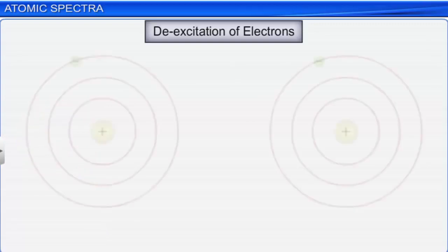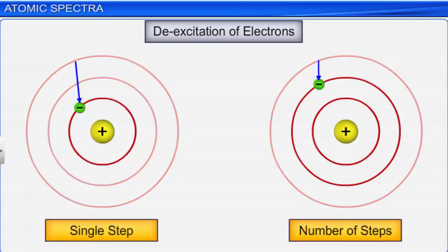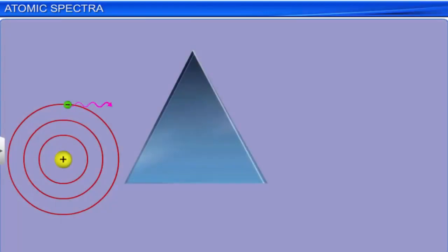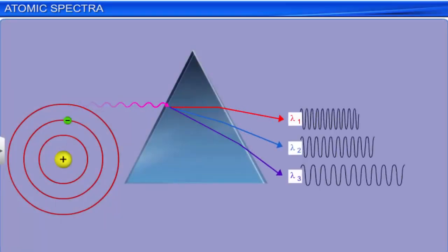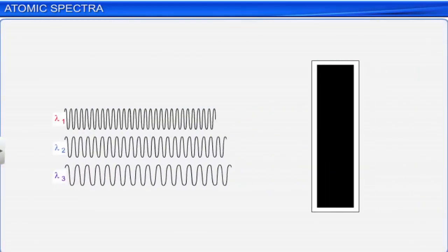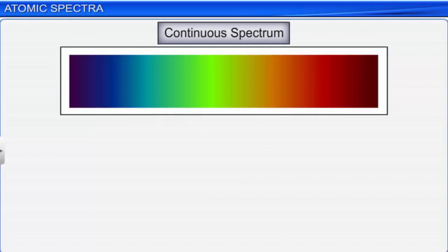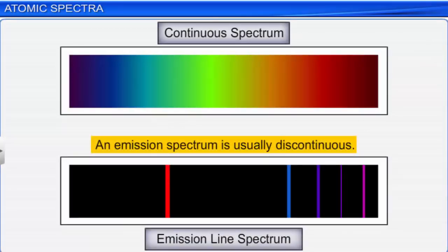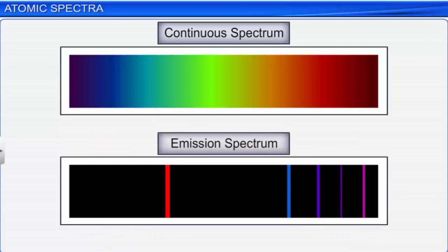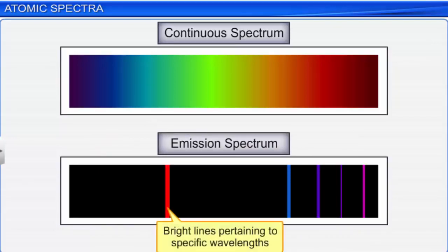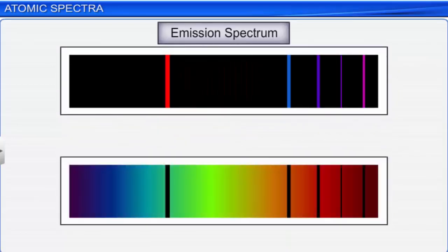As atoms are unstable in their excited states, they revert to their original state — the ground state — by emitting the same amount of energy they had absorbed. This energy can be emitted in a single step or in a number of steps. Depending on the amount of energy emitted, radiation of a particular wavelength is obtained. The spectrum of radiation emitted by an atom is called an emission spectrum. In contrast to the continuous spectrum of white light, an emission spectrum is usually discontinuous with dark spaces between bright lines. Such a spectrum is called a line spectrum.